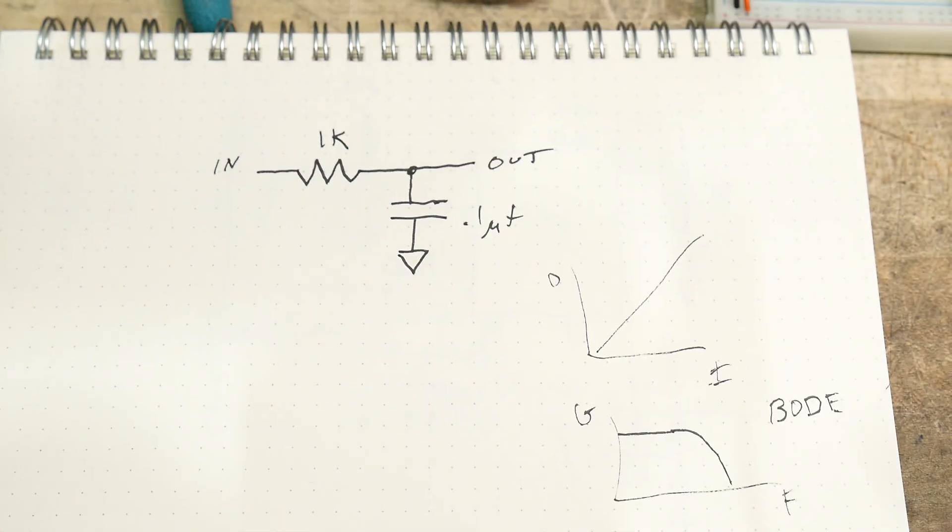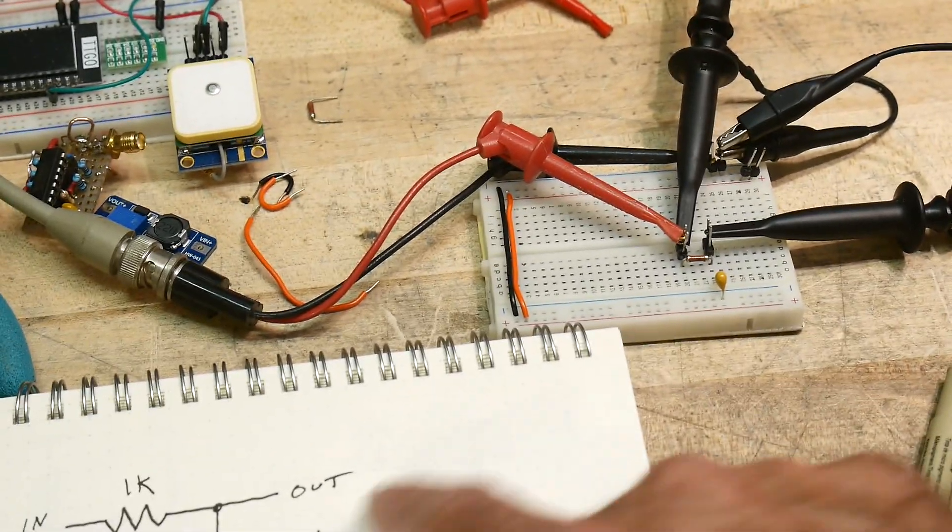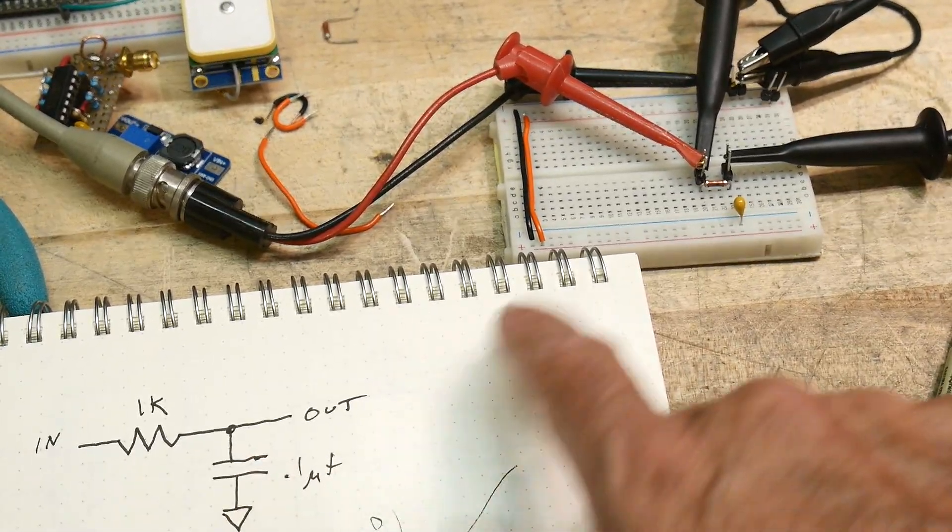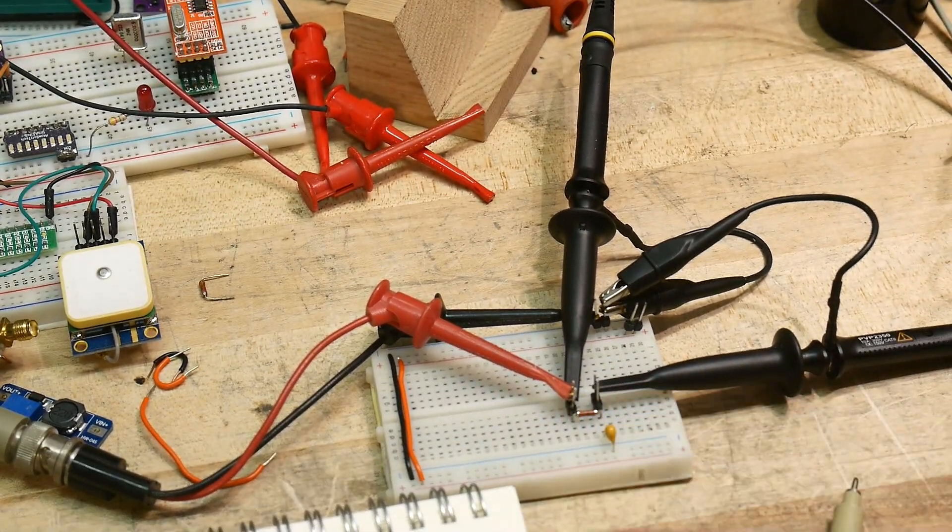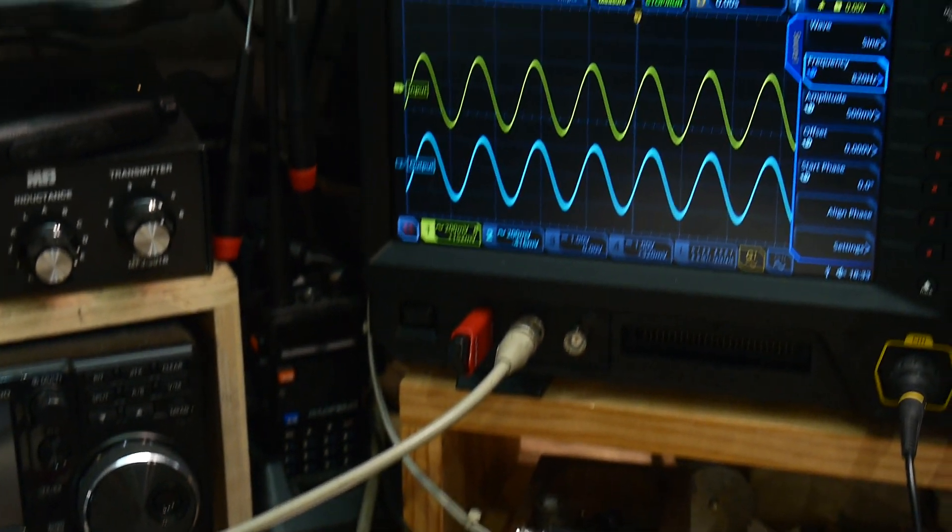And so we're going to hook this circuit up. I have it right here. It's just a 1k and a 0.1 microfarad. I have scope probe on the input and scope probe on the output, and then I have a function generator coming into it to supply its signal.